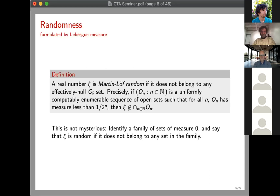A question on the definition: uniformly computably enumerable means you have one algorithm that enumerates finite binary sequences and pairs (j, σ), such that σ belongs to O_j if and only if the algorithm enumerates the pair (j, σ). The open set O_j is the set of reals — i.e., infinite binary sequences — x such that there exists σ with (j, σ) enumerated by the algorithm.